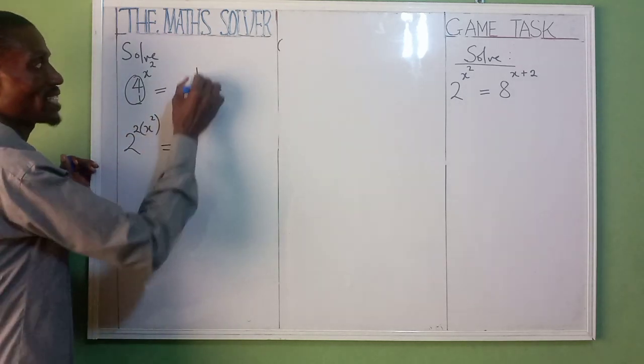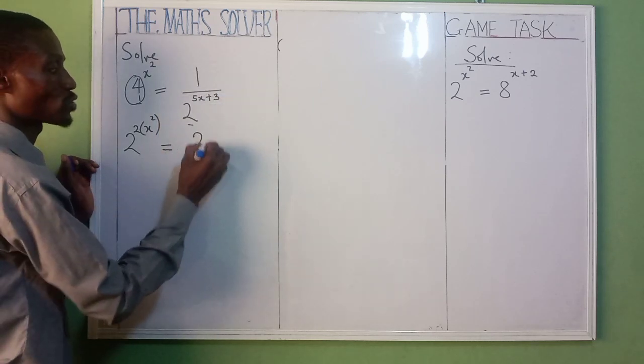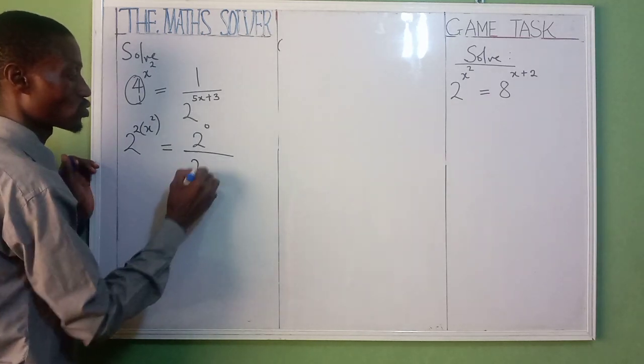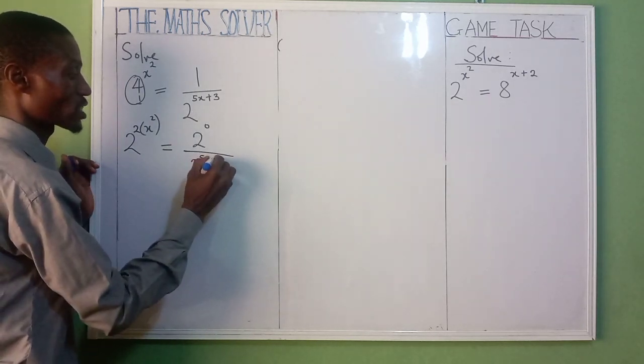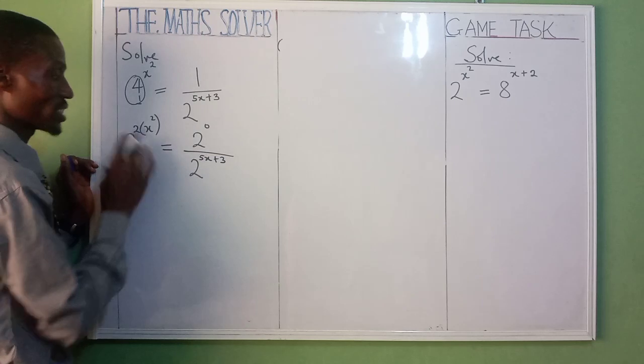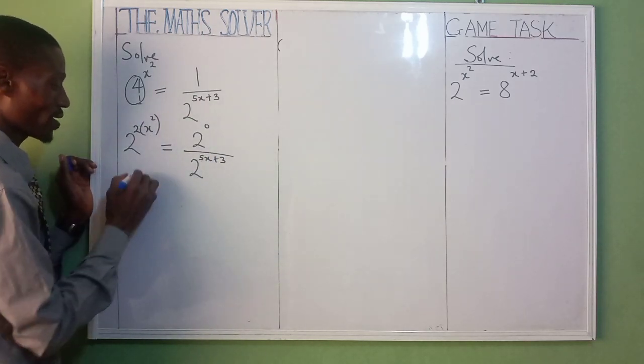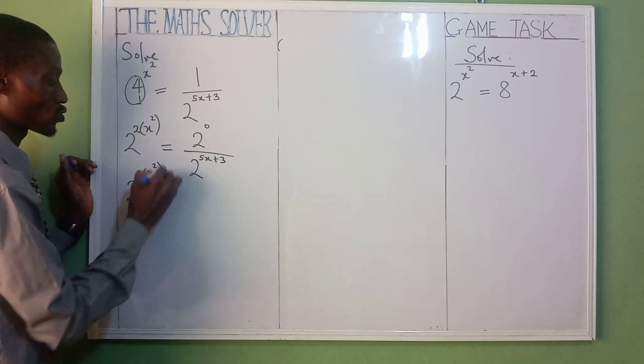Equal to, don't forget anytime you have 1, 1 is the same as 2 raised to the power of 0. Divided by 1 that is down, 2 raised to the power of 5x plus 3. You can see everything is now in base 2.